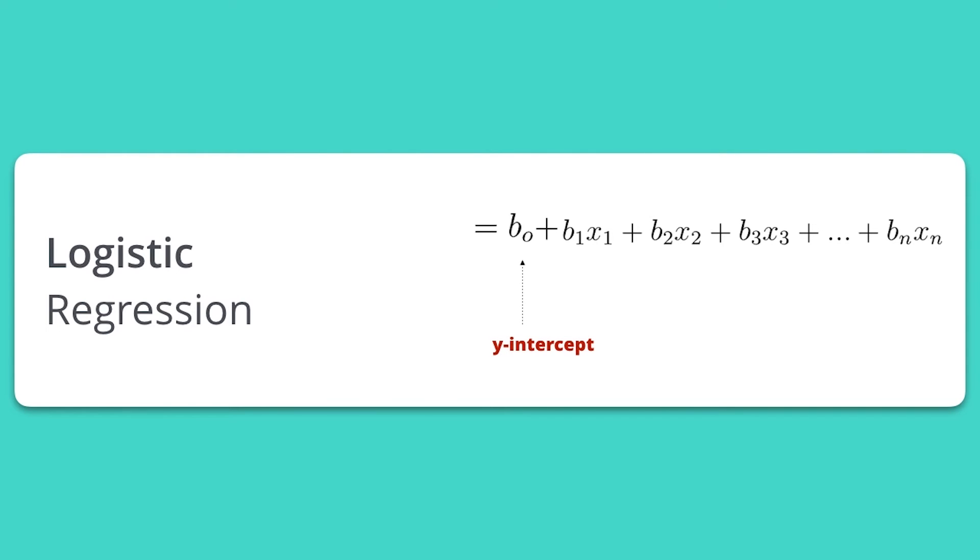Where again, beta naught represents the intercept or baseline value, and beta 1, beta 2, beta 3, all the way up to beta n represent the coefficients of the variables x1, x2, x3, all the way to xn.